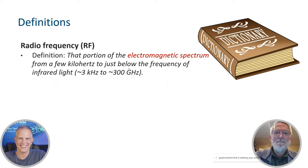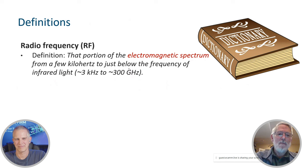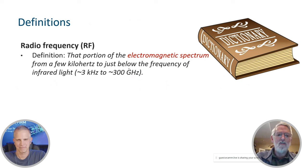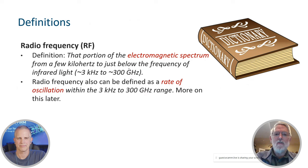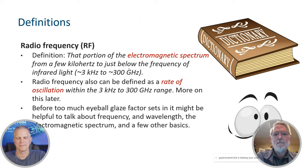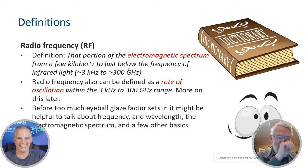Radio frequency can be thought of as that part of the electromagnetic spectrum ranging in frequency from a few kilohertz to just below the frequency of infrared light, up to about 300 gigahertz. That's a pretty wide range. We can also define radio frequency as the rate of oscillation within that frequency range, roughly three kilohertz to 300 gigahertz. Before too much eyeball-glaze factor sets in, let's get back to some basic concepts such as frequency, wavelength, and the electromagnetic spectrum.